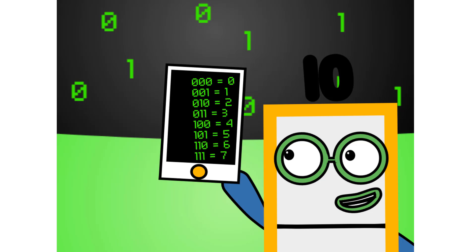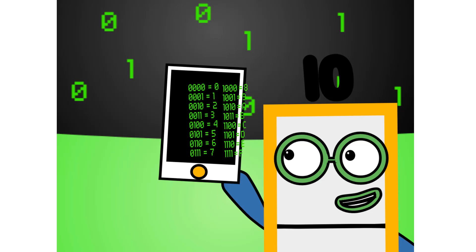There are 8 different combinations of 3-digit numbers in binary. This means that binary can easily be coded into octal. There are also 16 different combinations of 4-digit numbers in binary. This means that binary can easily be coded into hexadecimal too.